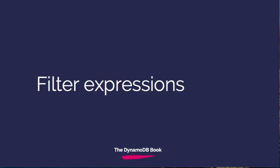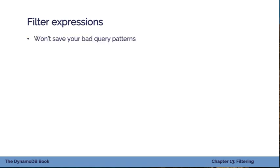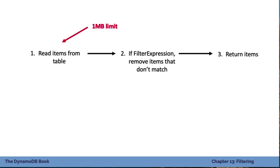The last two strategies are a bit different because they don't use your primary key. The first is the filter expression, which we've talked about before. On a query or scan operation, you can include a filter expression to exclude items that don't match your condition, and you can do this on non-key attributes. However, this will not save bad query patterns — you should only use it in specific circumstances. The filter expression is applied after the items are read from the table, which means you're already subject to the one megabyte limit and already paying for reading all those items. It's just a nicety to help filter out some items that don't match.